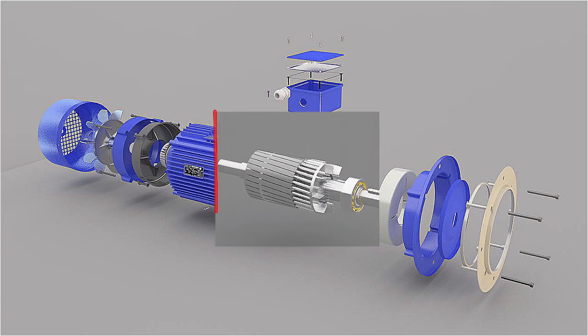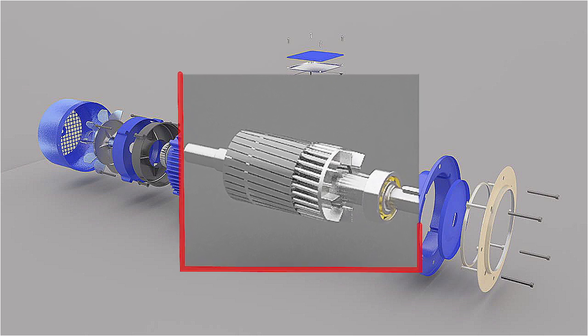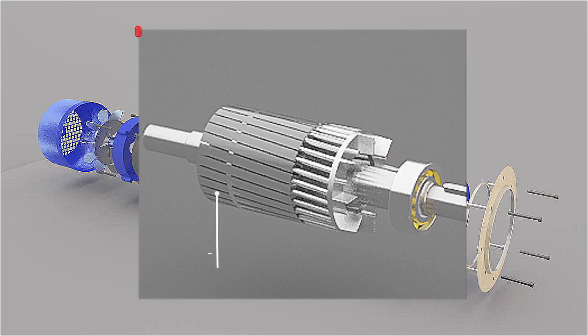The rotor is also built of thin laminations of the same material as the stator. The laminated cylindrical core is mounted directly on the shaft. These laminations are slotted on the outer side to receive the conductors.